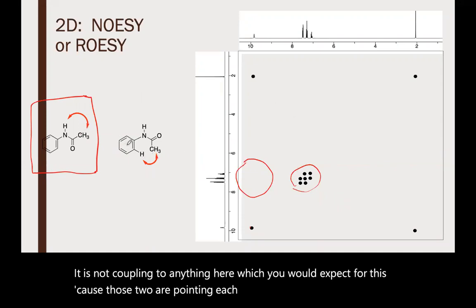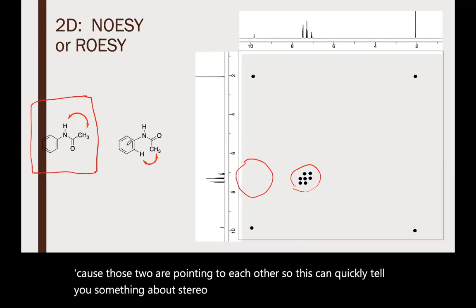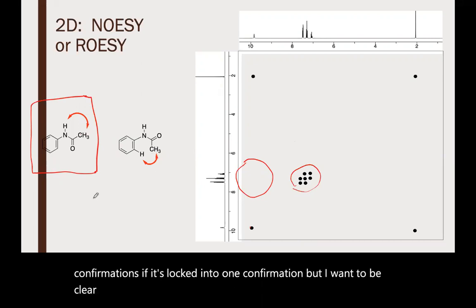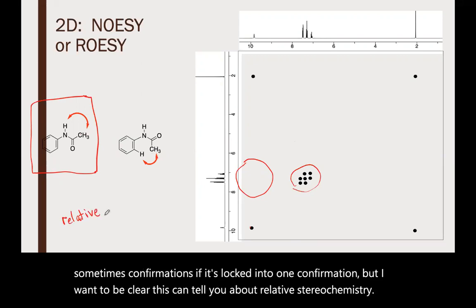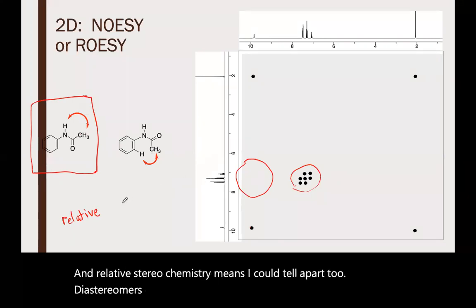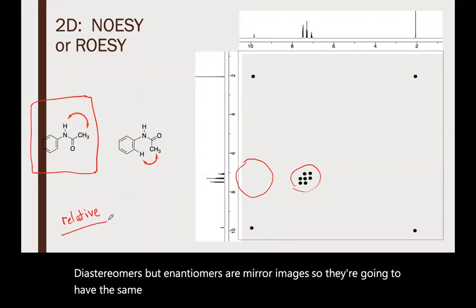This can quickly tell you about stereochemistry, geometric isomers, and sometimes conformations if locked into one conformation. But I want to be clear, this can tell you about relative stereochemistry. Relative stereochemistry means I could tell apart two diastereomers, but enantiomers are mirror images so they're going to have the same NOESYs. So this is relative stereochemistry, diastereomers.